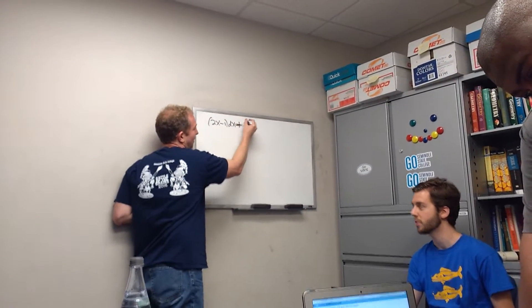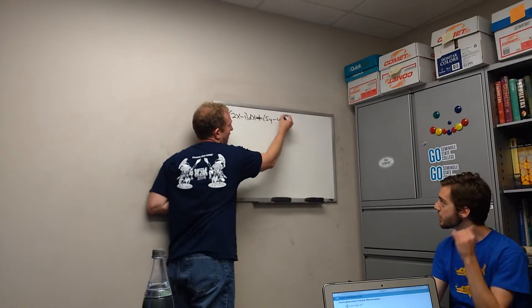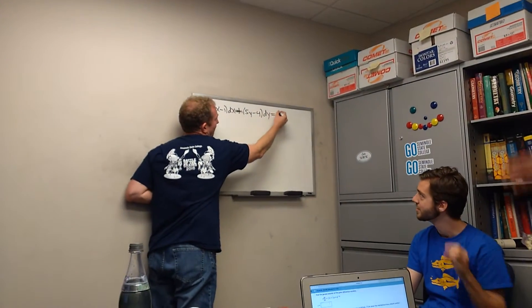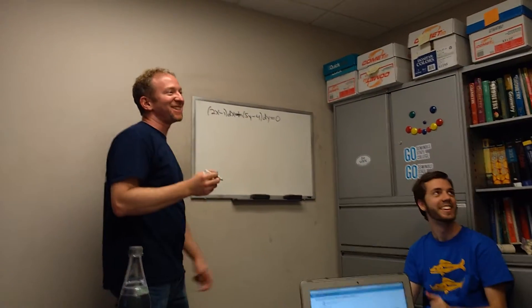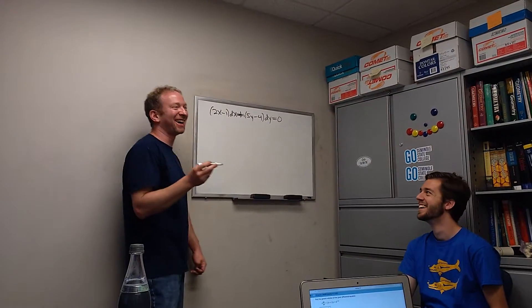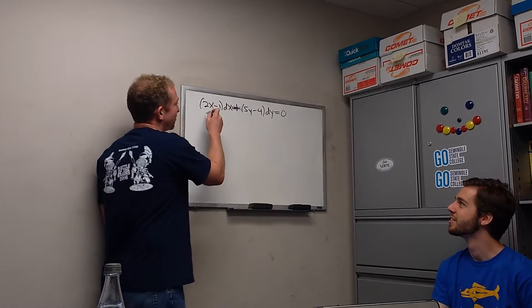Plus quantity 5y plus 4dy equals 0. Oh man, I missed it! del M del y, del M del x. Yeah, that's right, del M del y, del M del x. Okay, so first of all guys,